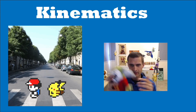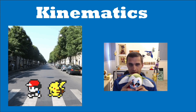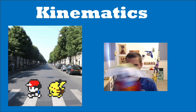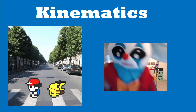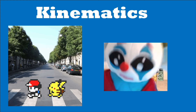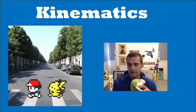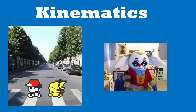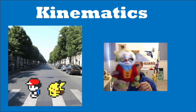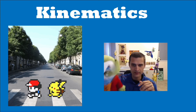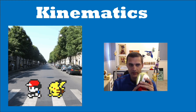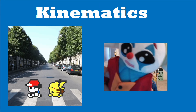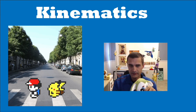This is the start of kinematics. Kinematics is the branch of physics that looks at the study of motion — specifically, the study of motion without looking at the forces causing motion. It looks at an object's position, its velocity, and its acceleration as a function of time. It doesn't look at why it's moving yet; that's for later in physics.